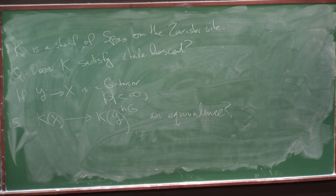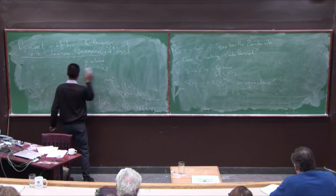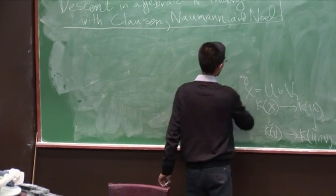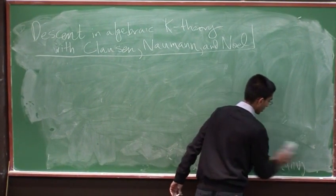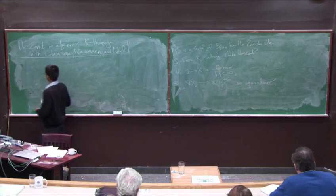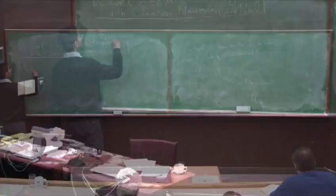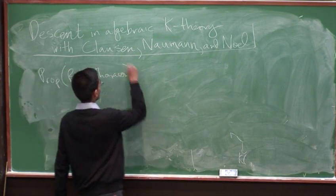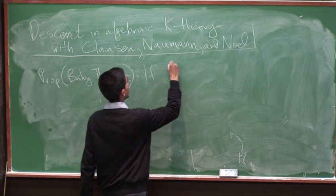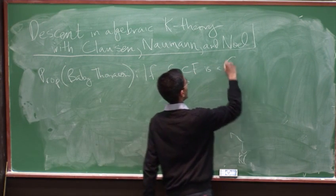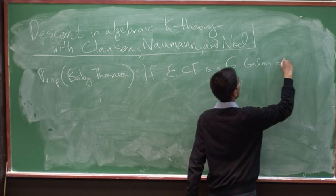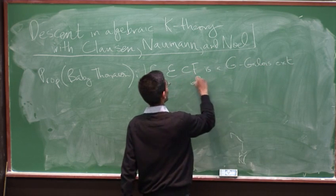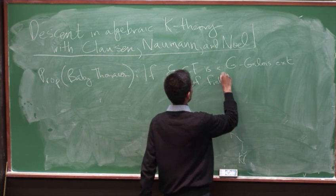So this is the type of question that Thomason considered. And let me start by observing that when you invert the order of the group, everything is fine in this setting. So I'm going to consider the simpler case of the Galois extension of fields, though it's not hard to adapt the argument to the general case. So proposition, and I call this baby Thomason.